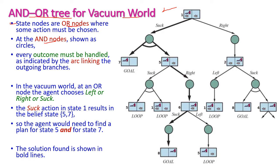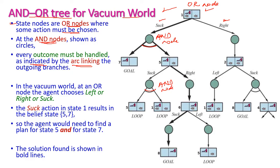The AND-OR tree for our vacuum world contains both AND nodes and OR nodes. The state nodes are OR nodes where an action must be chosen. In the OR node, we need to select any of the actions — here, suck action and right action are selected. AND nodes are shown as circles, and every outcome must be handled, as indicated by an arc link. At an OR node in the vacuum world, the agent chooses left, right, or suck.